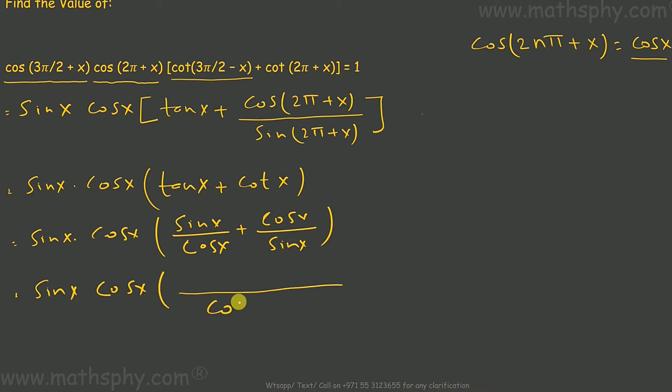So sine x cos x, this will be cos x into sin x. This will be sin x, sin x plus cos x plus cos x plus cos x. So this can be cancelled. Sin x plus cos x gives you 1.